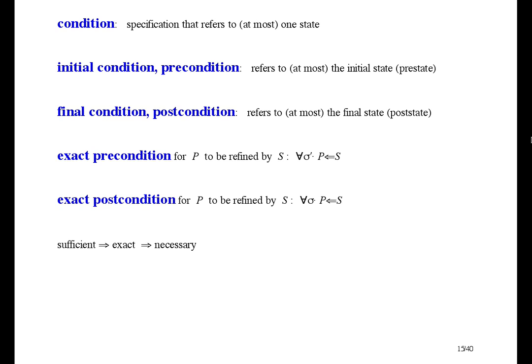A sufficient precondition is any precondition that implies the exact precondition. A necessary precondition is any precondition that is implied by the exact precondition. So the exact precondition is the necessary and sufficient precondition. And similarly for post-conditions.